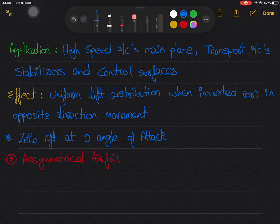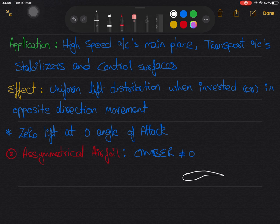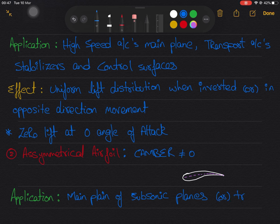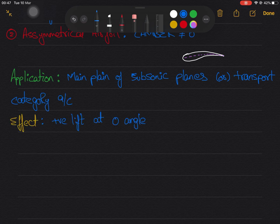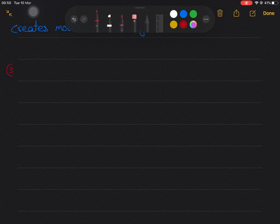Now we will see asymmetric airfoils which has non-zero camber. It is used in main plane of transport or subsonic planes. This creates positive lift at zero angle of attack making the plane to get off from ground at lower air speeds and also creates more induced drag which is not good.